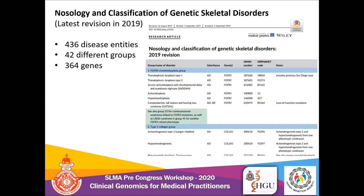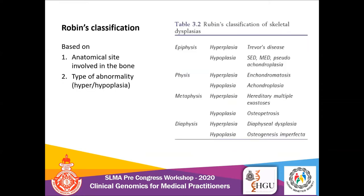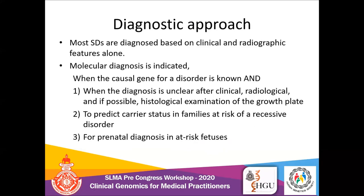Because of that complexity, clinicians love to use the Robbins classification as it is very simple and straightforward. It is based on the predominant anatomical site in the bone and the type of abnormality — hyperplasia or hypoplasia. For example, osteogenesis imperfecta comes under diaphysis and hyperplasia.